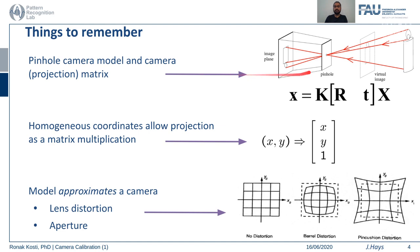Since we already know the world coordinates and image coordinates, how do we use that information to find or estimate the camera matrix or projection matrix? That is our main task. In that pursuit, we make use of homogeneous coordinates, which allow projection to be represented as a matrix multiplication, making our lives easier.